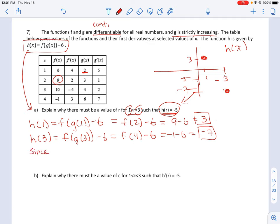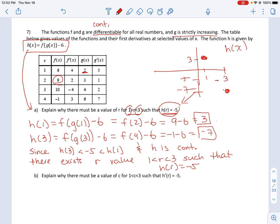So we can make the conclusion: since h(3) is negative 7 and negative 5 is between h(1) equals 3 and h(3) equals negative 7, and h is continuous, there exists an r value between 1 and 3 such that h(r) equals negative 5. You don't have to use the words intermediate value theorem; you can just say because it's continuous, there exists such an r value.